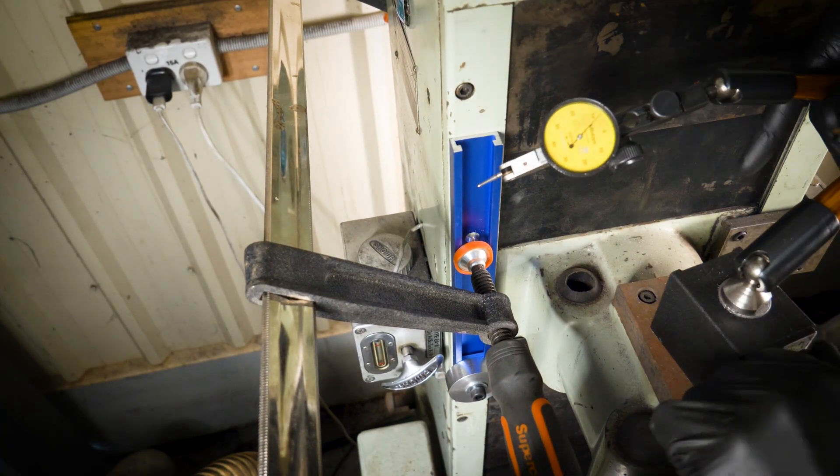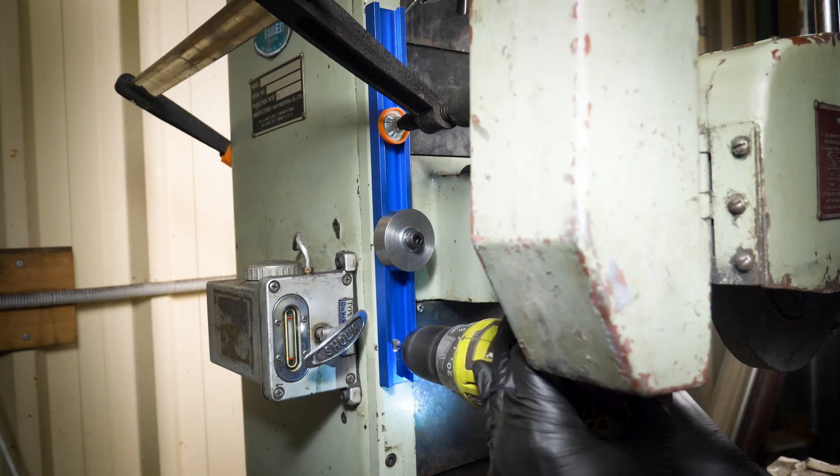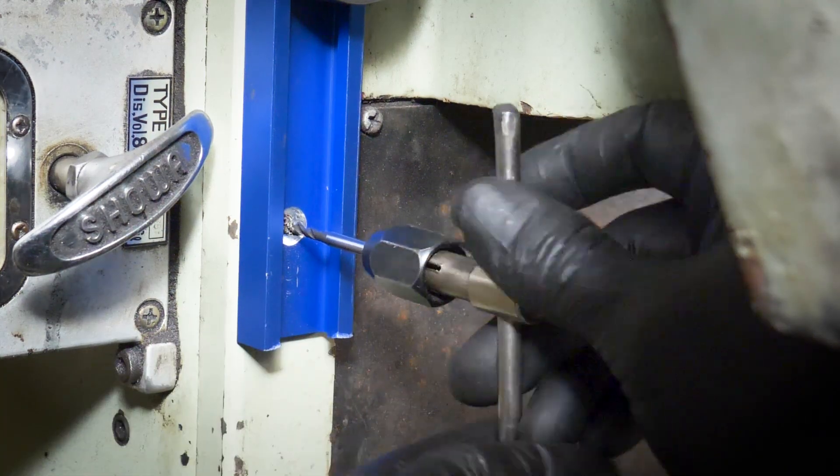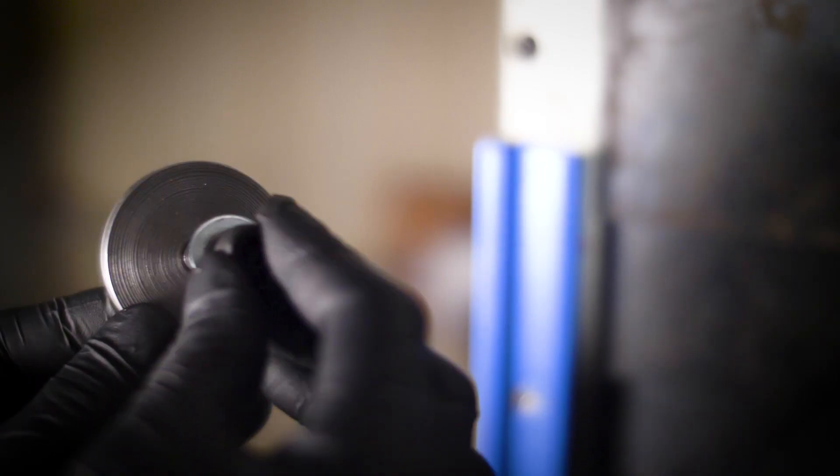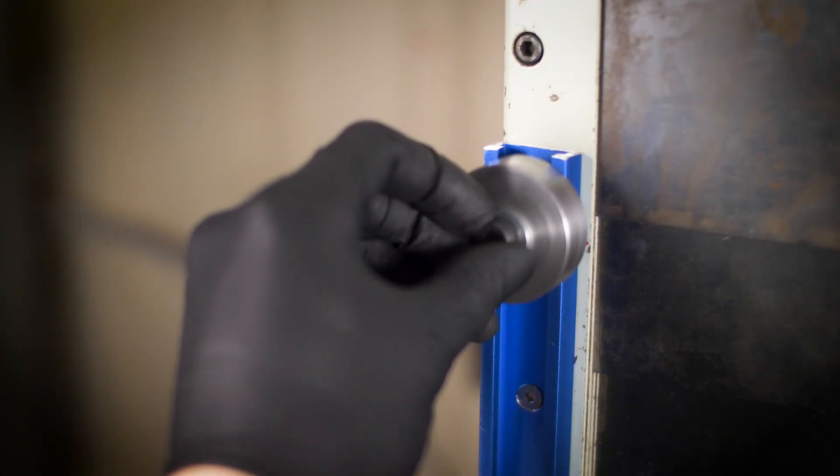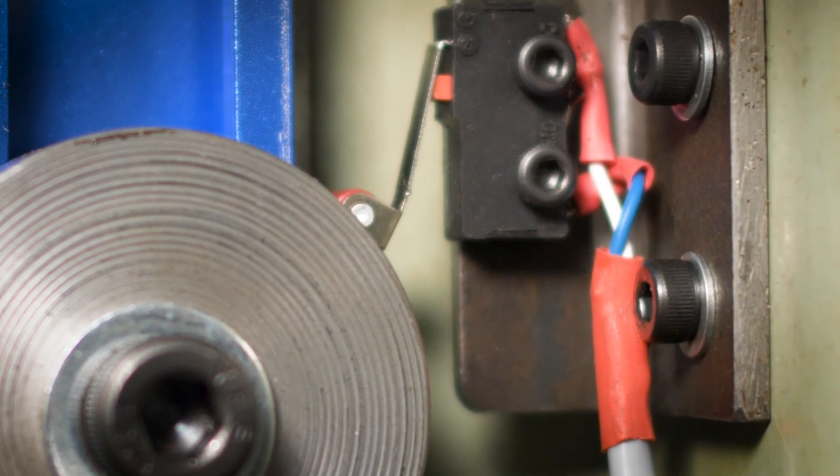I carefully indicated the t-track so it was square to the machine axis. And then I used standard aluminum t-nuts. And once again we have a nice overrunning limit switch action.